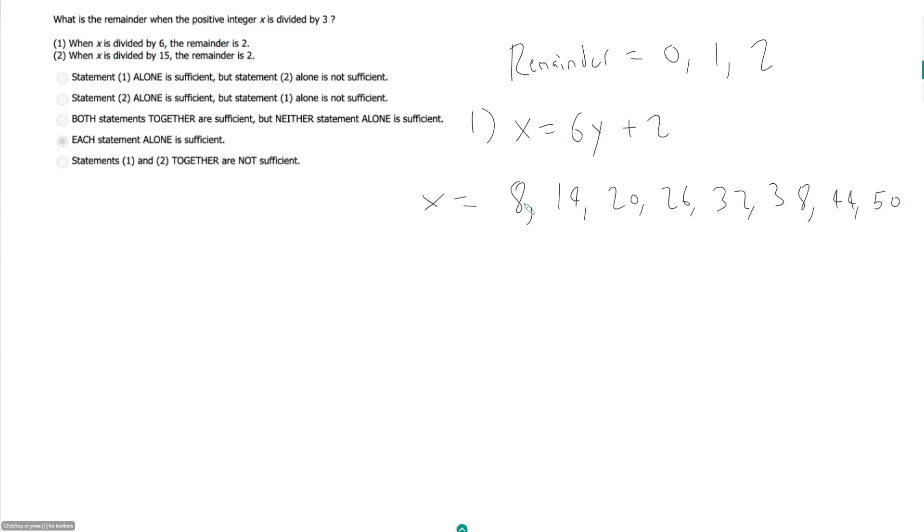So what is 8 divided by 3? That is 2 remainder 2. What is 14 divided by 3? That is 4 remainder 2. And what is 20 divided by 3? That is 6 remainder 2. So it looks here like we got a pattern so far.